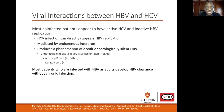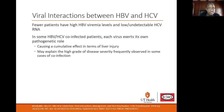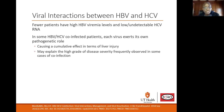Most patients who are infected with hepatitis B as adults develop hepatitis B clearance without chronic infection. Fewer patients have high hepatitis B viremia levels with low or undetectable hepatitis C RNA. In some hepatitis B and hepatitis C co-infected patients, each virus exerts its own pathogenic role. This may cause a cumulative effect in terms of liver injury and may explain the high degree of disease severity frequently observed in some cases of co-infection.